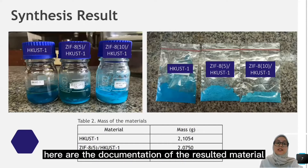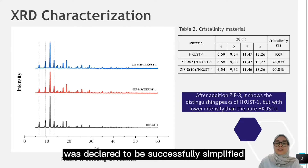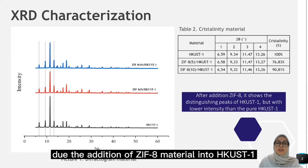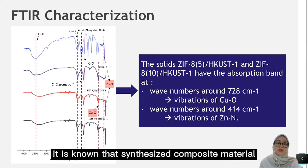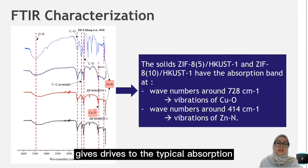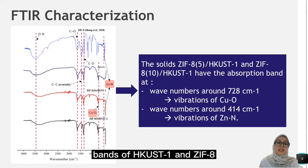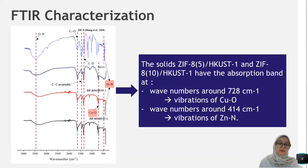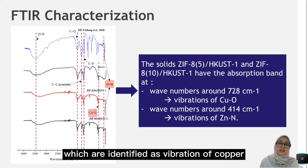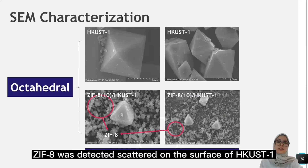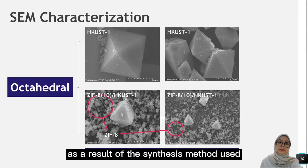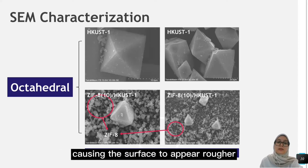Here is the documentation of the resulting material. The composite material was declared to be successfully synthesized because there was no drastic change due to the addition of ZIF-8 into HCAS-1. Based on the FTIR characterization, the synthesized composite material gives rise to the typical absorption bands of both HCAS-1 and ZIF-8, namely wave numbers around 728, identified as vibrations of the copper-oxygen bond belonging to HCAS-1, and around 440, detecting vibrations of the zinc-nitrogen bond belonging to ZIF-8. ZIF-8 was detected scattered on the surface of HCAS-1 as a result of the synthesis method used.